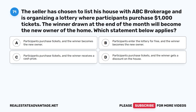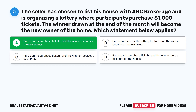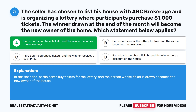Question 71: The seller has chosen to list his house with ABC Brokerage and is organizing a lottery where participants purchase $1,000 tickets. The winner drawn at the end of the month will become the new owner of the home. Which statement below applies? A. Participants purchase tickets, and the winner becomes the new owner. B. Participants enter the lottery for free, and the winner becomes the new owner. C. Participants purchase tickets, and the winner becomes the new owner. D. Participants purchase tickets, and the winner gets a discount on the house. The correct answer is A: Participants purchase tickets, and the winner becomes the new owner.